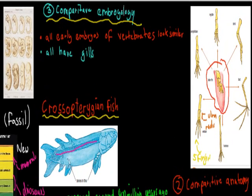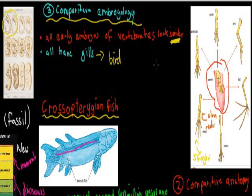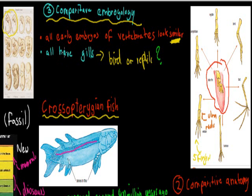Next is comparative embryology — the fact that all early embryos look very similar. A fish, an amphibian, a mammal, and a bird have very little in common in terms of their looks, but when they're at that earlier stage, only a couple of days old, they all look very similar. They even all have gills. The reason birds and reptiles have gills in their embryos is because if they descend from that crossopterygian fish, which obviously had gills, they still share some features of that early ancestor, even though those gills disappear in later development.